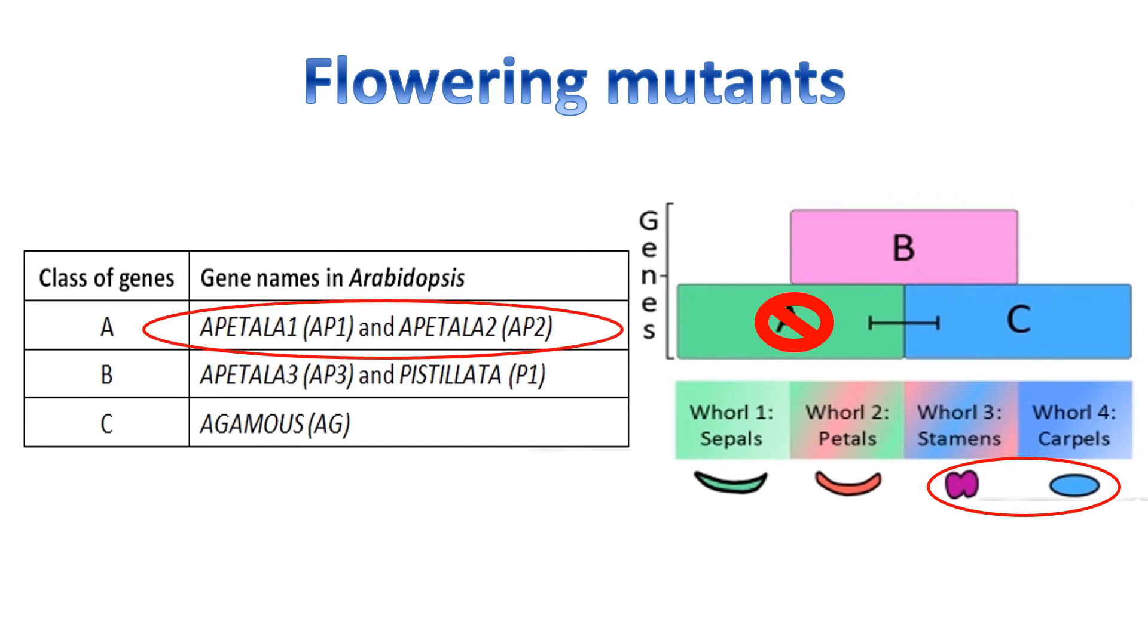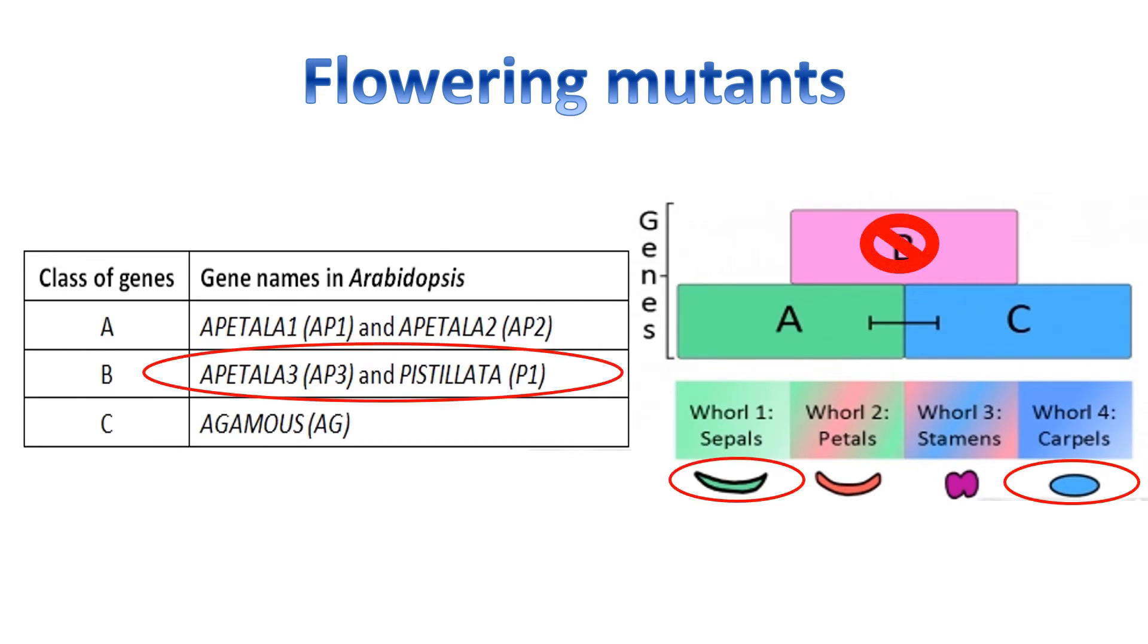Similarly, a class B mutant will only have sepal and carpel, and the genes responsible are APETALA3 and PISTILLATA. A class C mutant will only have sepal and petals, and the gene responsible is AGAMOUS.